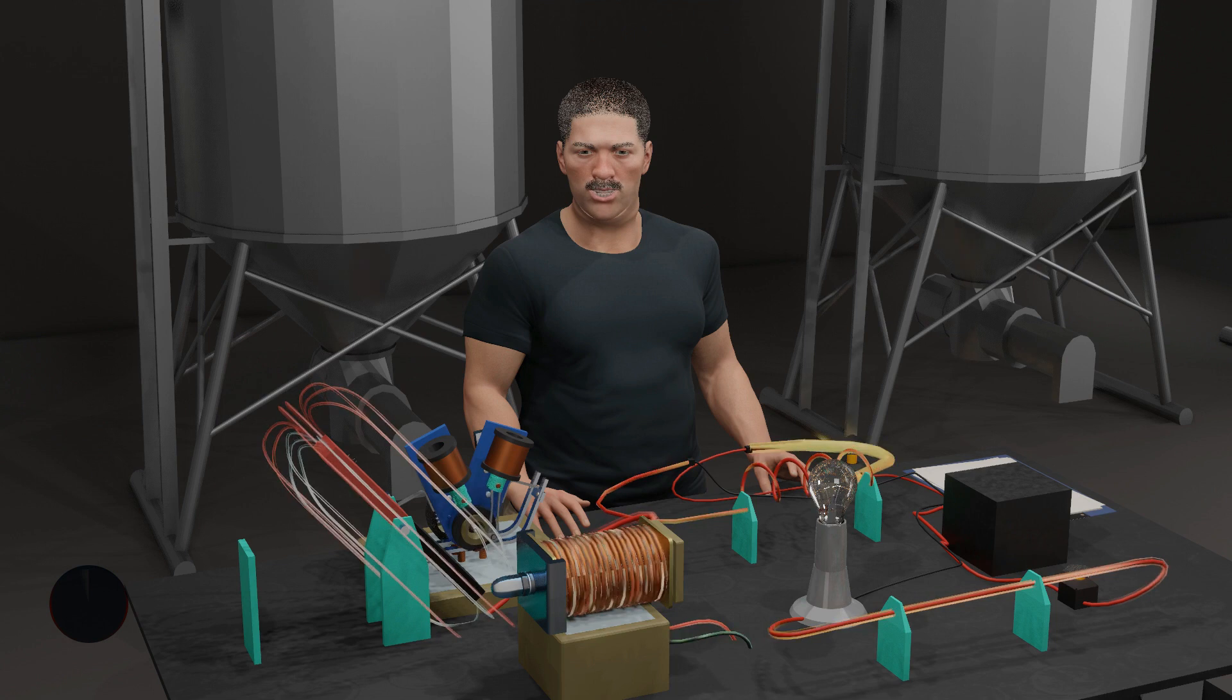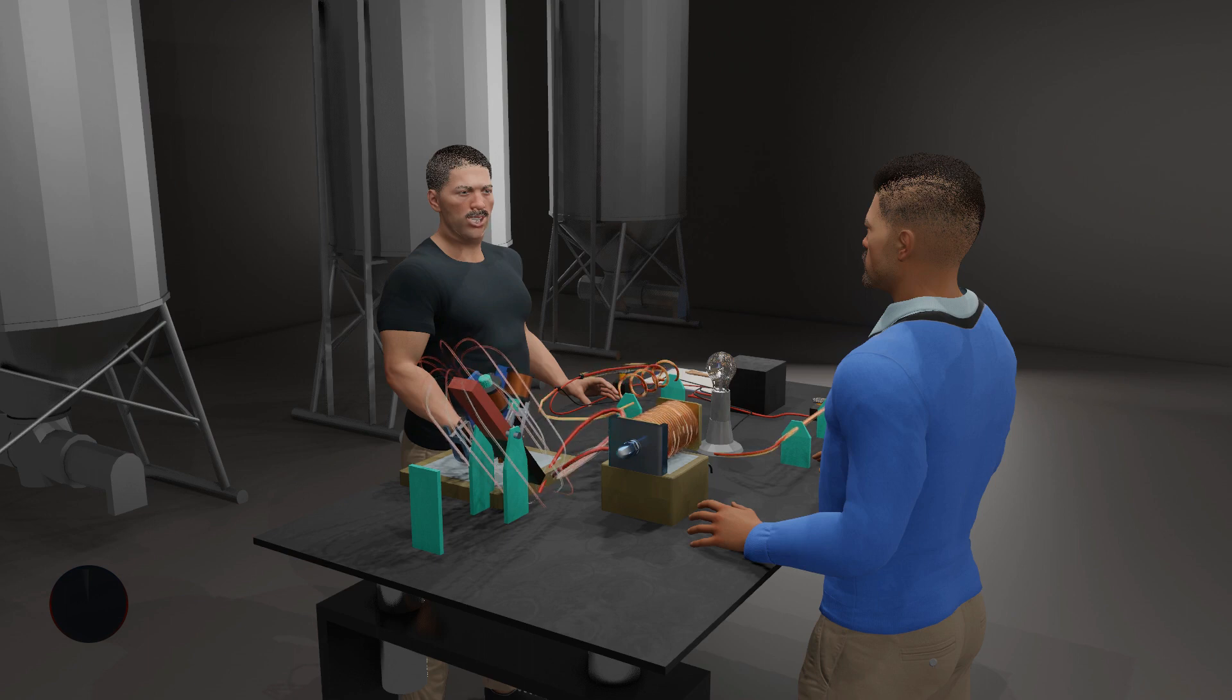However, the reverse is the case for permanent magnets. In magnets, the emitted magnetism cannot be easily controlled. Instead, it has to be moved away. And that is it for today's series. I hope you have learned something new today. See you at the next one.